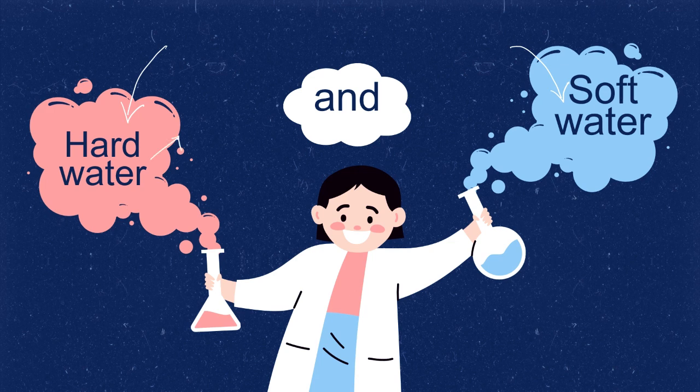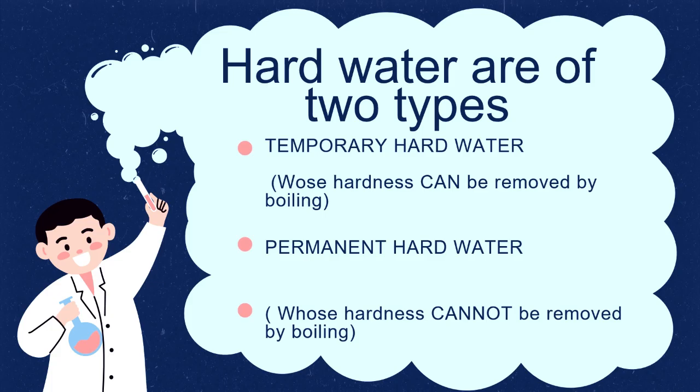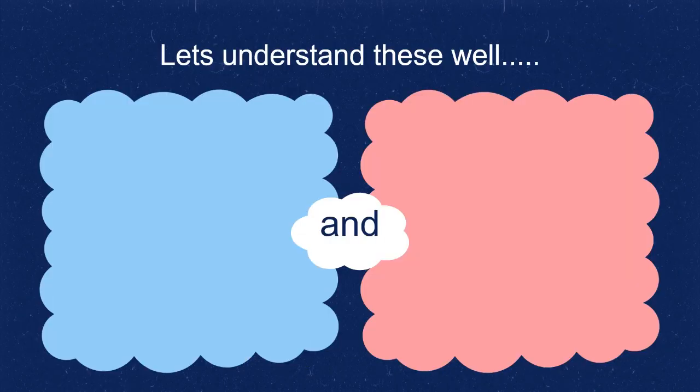Hard water basically are of two types. One is temporary hard water whose hardness can be removed, and permanent hard water whose hardness cannot be removed. Let's understand these well. The salts of calcium and magnesium are responsible for your hardness of water.